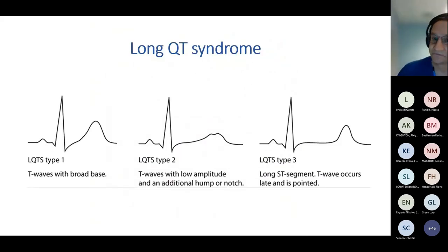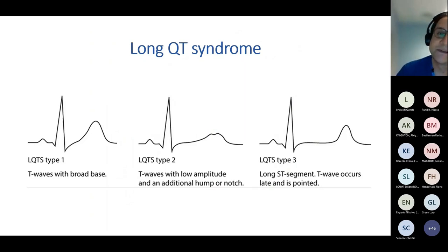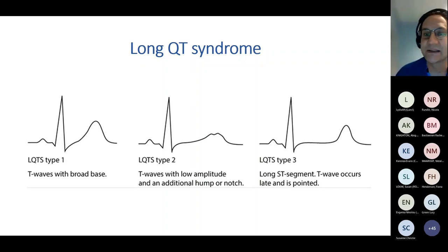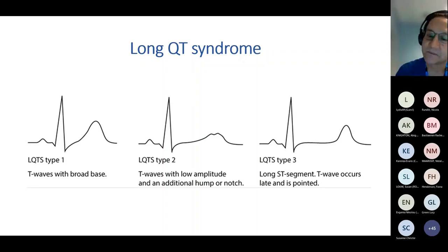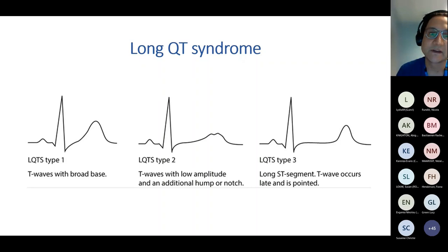So, Long QT — three main types and other more minor types. This is a nice diagram of the typical T-wave morphology seen in the different types. A lot of you may know this already, so some of this will be a summary, but hopefully there are some interesting bits specific to paediatrics.